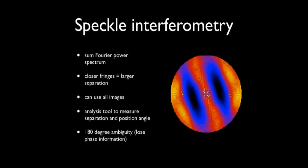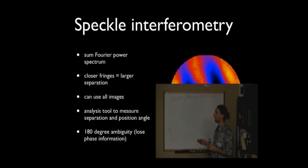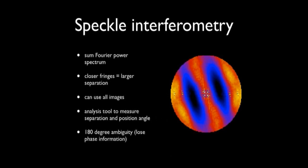The basic process for speckle interferometry is you take a two-dimensional Fourier transform of all the images, and you just stack them up, sum them up. If you have a binary, you'll get a fringe pattern that looks like this. It's basically saying that there's more frequently things in the image measured by this amount in spatial frequency. The closer together these fringes are actually mean larger separations. In some cases, it's easier to measure closer ones. It's easier to fit the fringe patterns if they're bigger. You can use all of the images for this, although I do. I'll talk about that a little bit more.